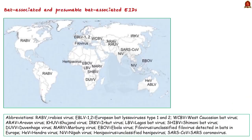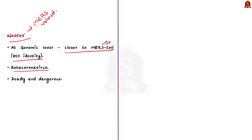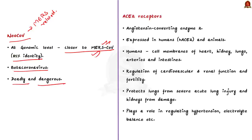Several MERS-related coronaviruses are found in bat species, and one among them is NeoCov — or NeoCov coronavirus. At the genetic level, NeoCov is closer to MERS-CoV than other bat coronaviruses, with 85% identity at the whole genome level, making it also a beta coronavirus — therefore deadly and dangerous like MERS-CoV. Researchers have now found that after some molecular changes, NeoCov can also efficiently infect human cells using the same pathway as SARS-CoV-2 — that is, through ACE2 receptors.